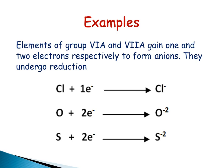Chlorine gains one electron and is converted into chlorine ion, known as chloride ion. Oxygen gains two electrons and is converted into oxide ion. Sulfur gains two electrons and changes into sulfide ion.